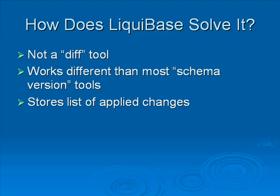It also works differently than most schema version tools. Schema version tools are, for example, the Ruby on Rails migrate command, where you have a specific database version, say version 10, and so the next change that needs to be applied is version 11, followed by version 12, and so on. This technique works well until you run into needing to do branches, in which case merges will oftentimes run into problems.